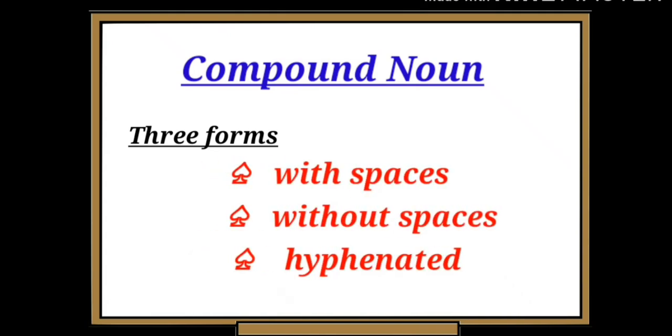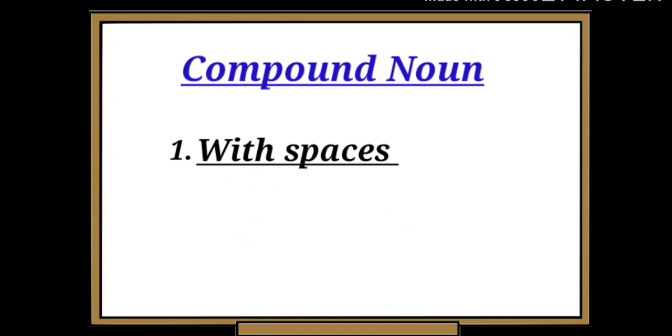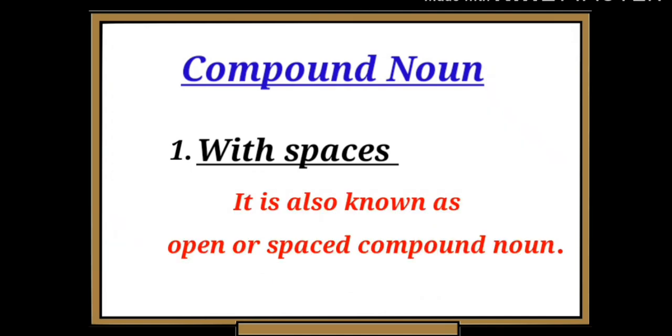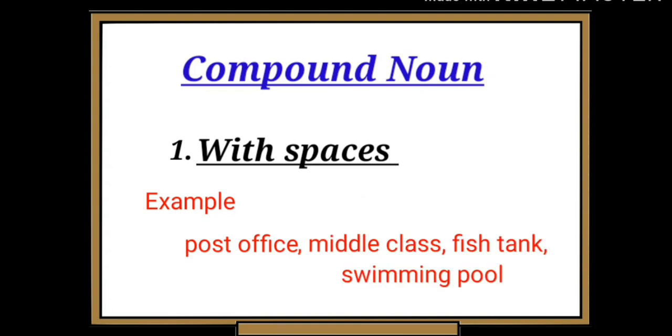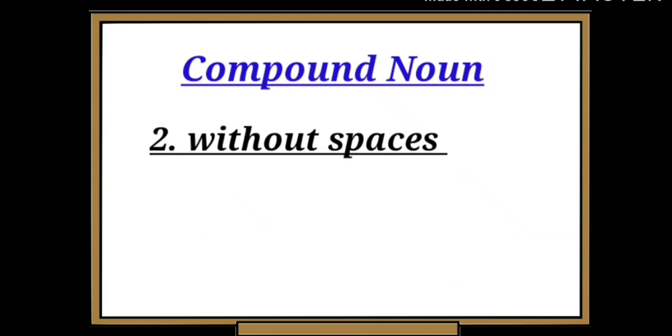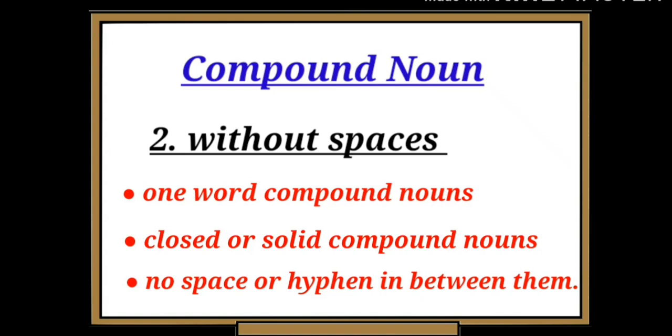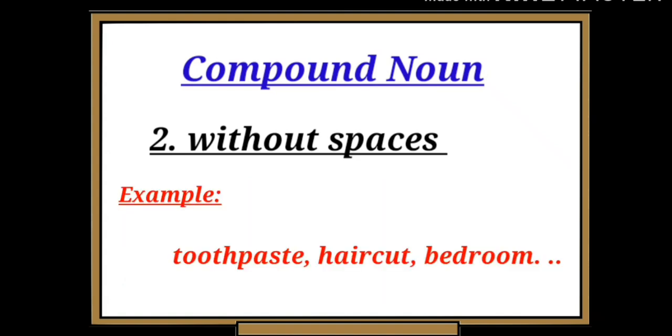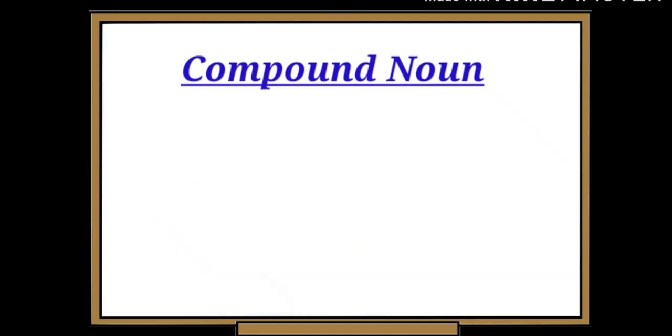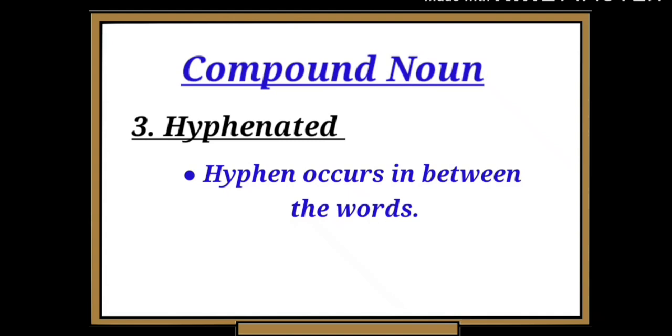First one: with spaces. The compound nouns with space are also known as open or spaced compound nouns. Examples are post office, middle class, fish tank, swimming pool, etc. Next, without spaces - these are one-word compound nouns, also called closed or solid compound nouns. There is no space or hyphens in between. For example: toothpaste, haircut, bedroom, etc. The next form is hyphenated. In this compound noun, the hyphen occurs in between the words. For example: mother-in-law, x-ray, co-pilot, etc.